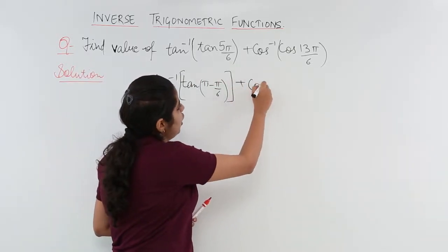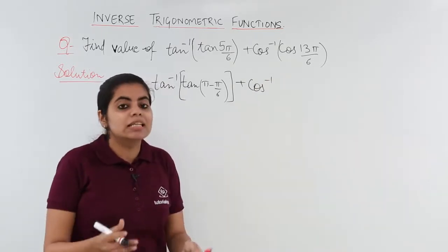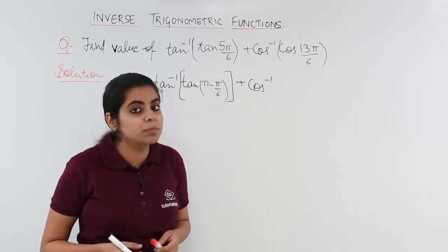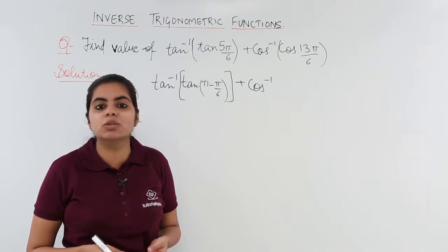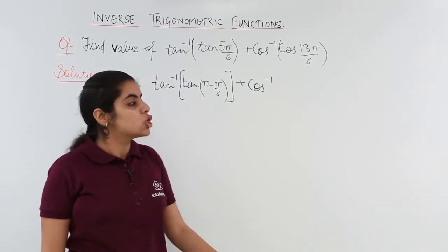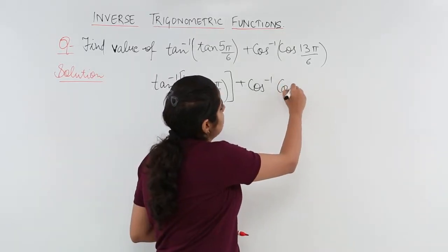Now plus cos inverse, what about 13π by 6? Does 13π by 6 lie in the range of principal value branch of cos inverse? No, because the range is what? 0 to π we already have learnt in the previous video. So this should be modified.